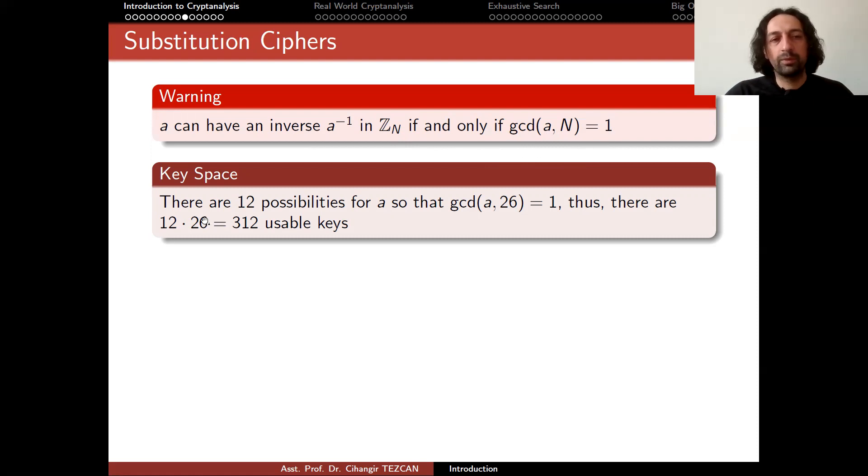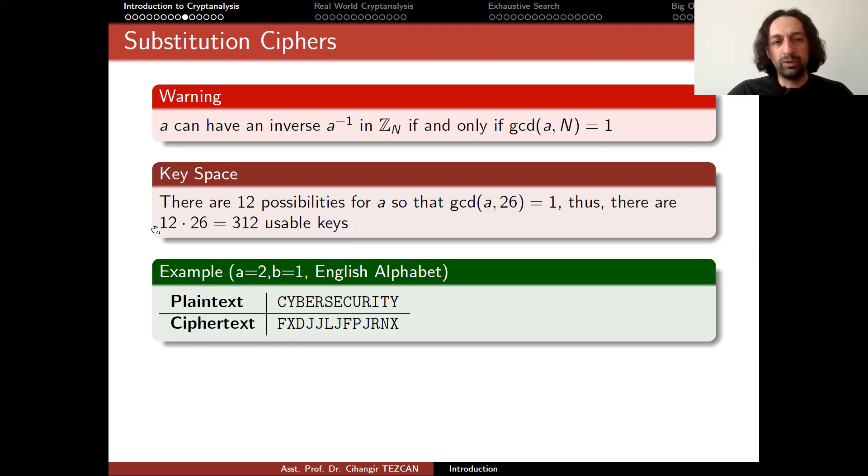Not every number has a greatest common divisor with 26 equals to 1. If you look, you will realize that there are actually 12 possibilities for a, so that the greatest common divisor of a and 26 equals to 1. Thus, there are 12 times 26, which is 312 usable keys. Again, anybody who can use pen and paper can try this many possibilities and break the system. Of course, with computers, this is in microseconds, but we're talking about historical ciphers. So a person can also break this by brute force attacks by trying every a and b.